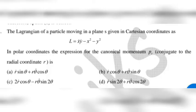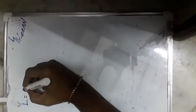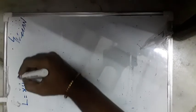In this problem, canonical momentum of a particle is to be determined whose Lagrangian is given as L = xy_dot - x² - y². The Lagrangian of the particle is given as x_dot y_dot - x² - y².